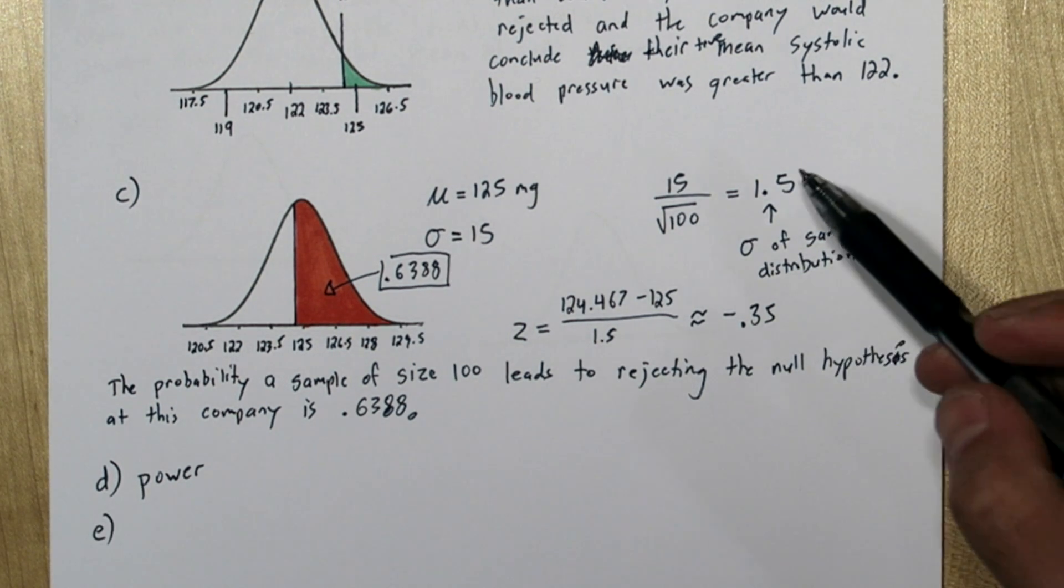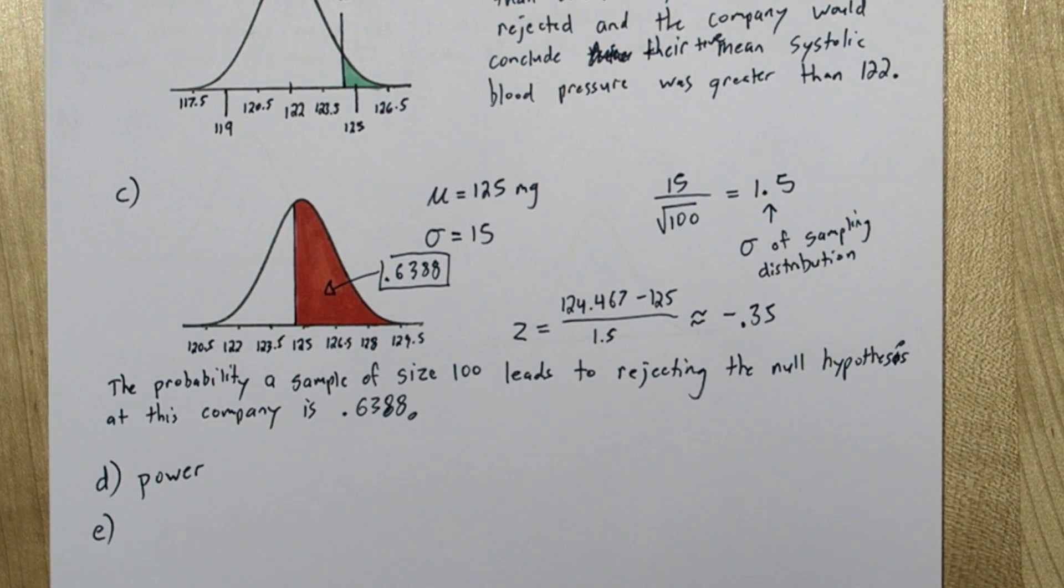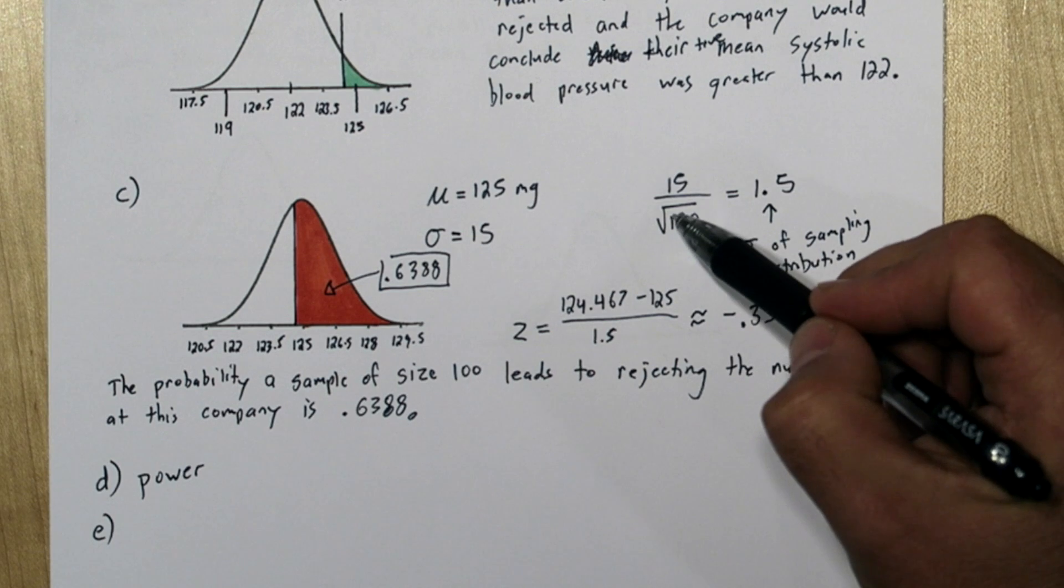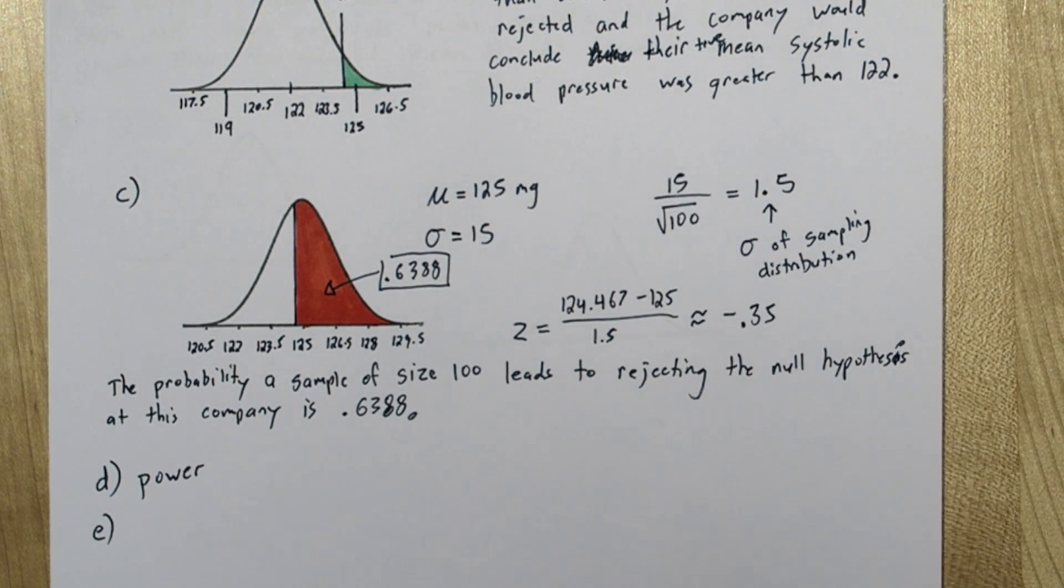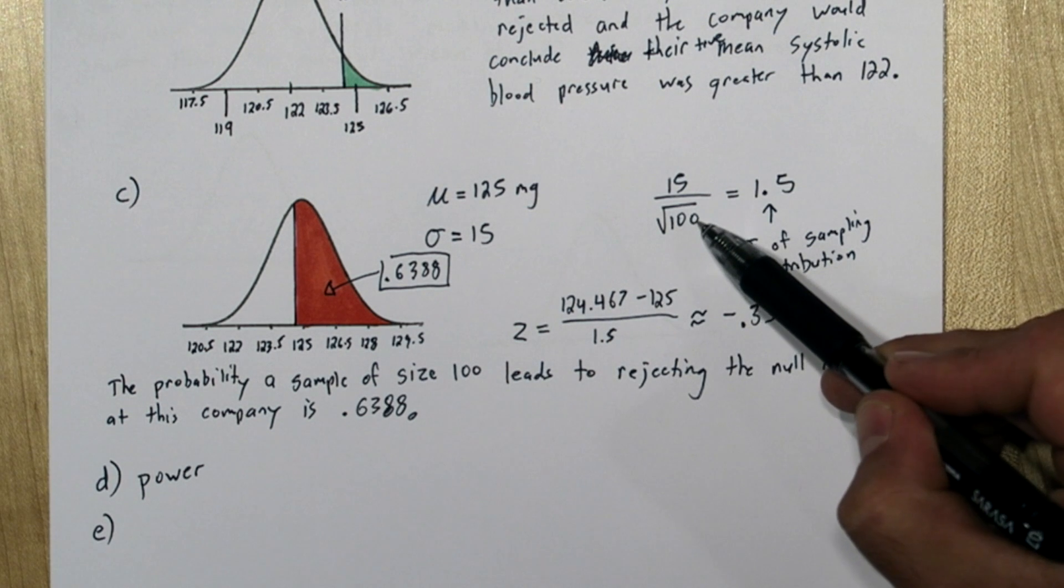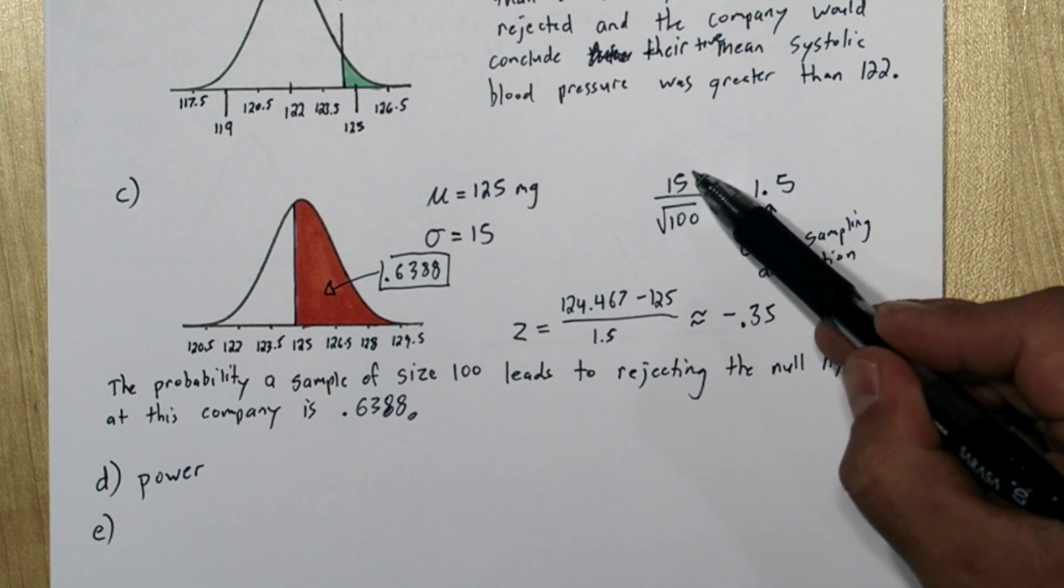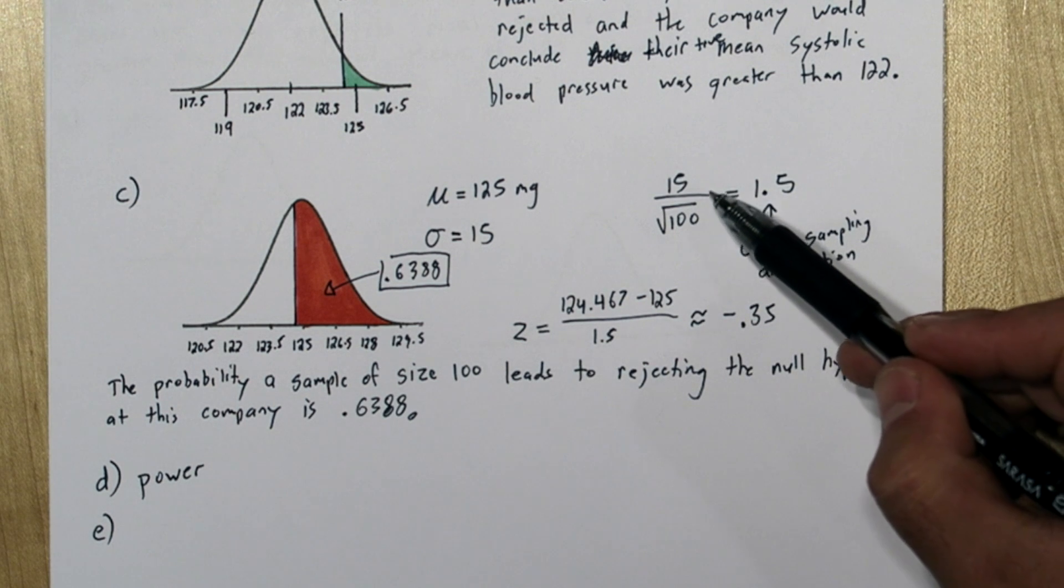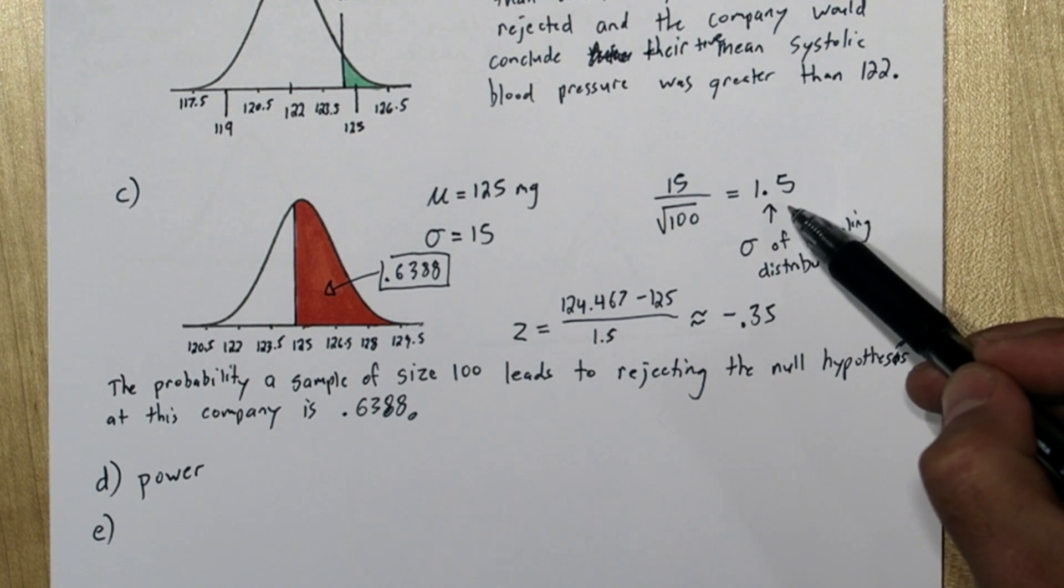Now in part C, we calculated the standard deviation of the sampling distribution. And part of that calculation was dividing the population standard deviation by the square root of the sample size. If this number increases, if the sample size increases, this population standard deviation will be divided by a larger number. And that will make the standard deviation of the sampling distribution smaller.